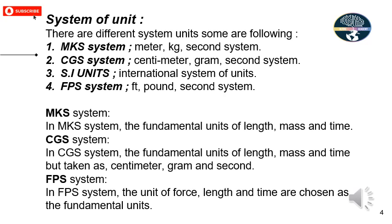The first system is the MKS system — meter, kilogram, second. If you use meter, kg, and second, especially in engineering, that is the MKS system. The CGS system includes centimeter, gram, and second. MKS is used for large quantities, while CGS is used for small quantities.